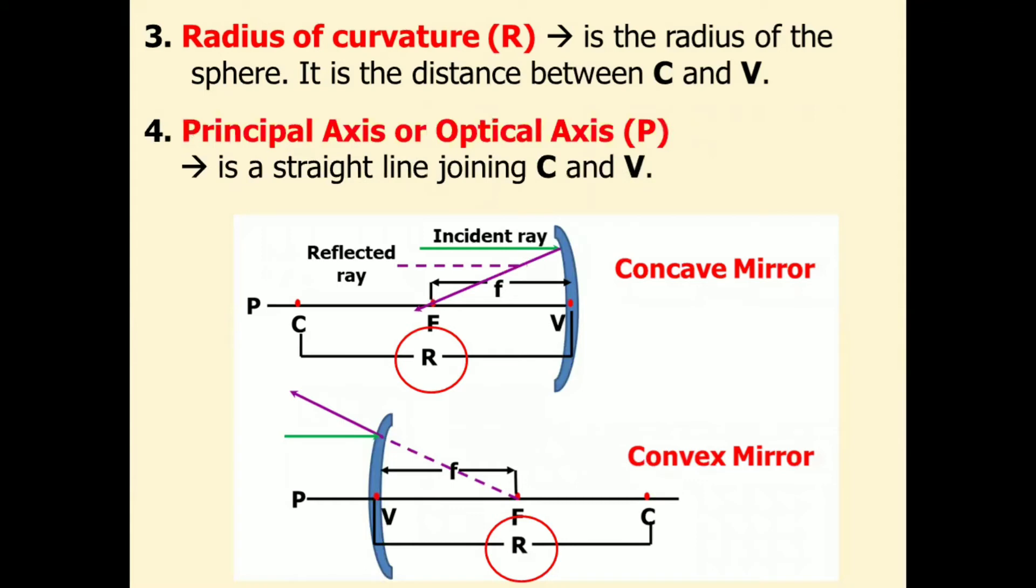The fourth terminology is the principal axis, also called the optical axis, represented by letter P. It is the straight line joining C and V. And this is the principal axis in our diagram.